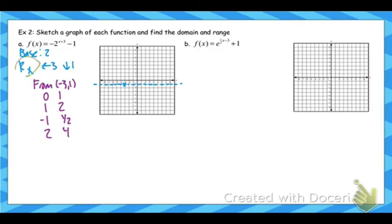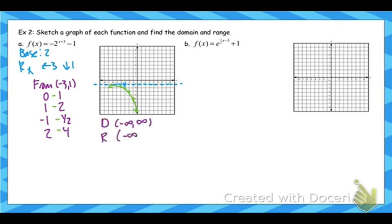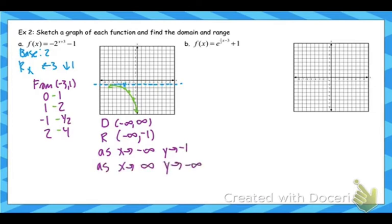Now let's apply the transformations. This has been reflected over the x, so I'm going to make all those y's negative. From that star: over 0, down 1; right 1, down 2; left 1, down one-half; and right 2, down 4. And that's my exponential function. Domain: negative infinity to infinity. Range: the lowest point on this graph is negative infinity; it keeps going until negative 1. End behavior: as x approaches negative infinity, y is getting closer to the asymptote at negative 1. As x gets bigger, y is approaching negative infinity.